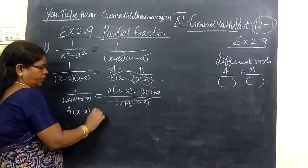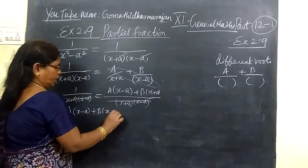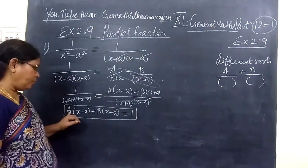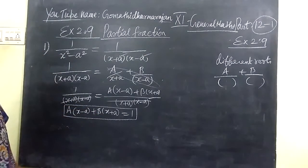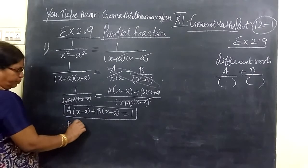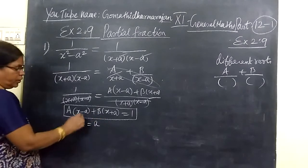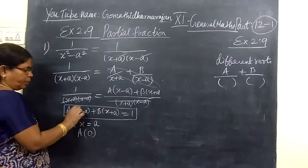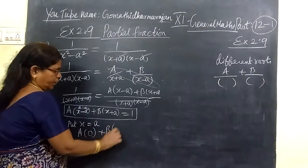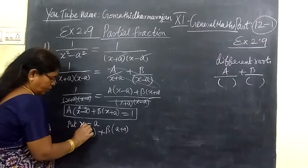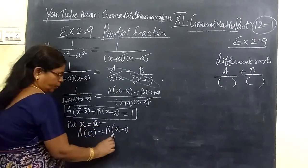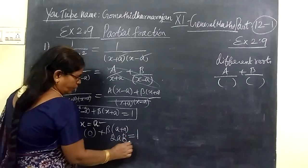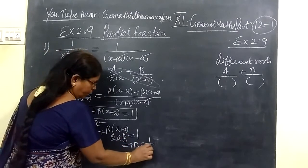We write A(x minus a) plus B(x plus a) equals 1. So if we want to find the value of A and B, then we will find that. So put x equal to a. This gives 2AB equals 1. It implies B equal to 1 by 2A.